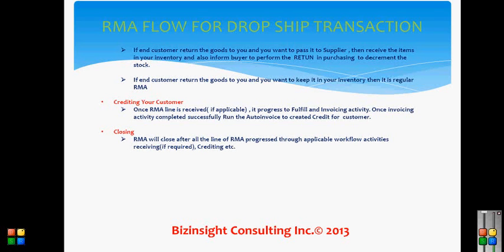The fourth type of receiving is pre-receiving processes: if the end customer returns the goods to you and you want to keep them in your inventory, then it is a regular RMA. In that case, just have a receiving activity in your RMA flow and receive the goods. You do not need to inform the buyer to do any return transaction to the vendor.